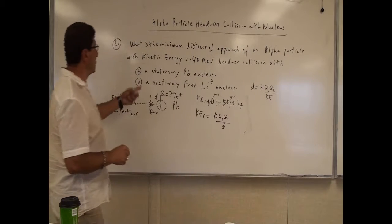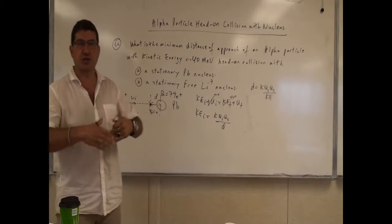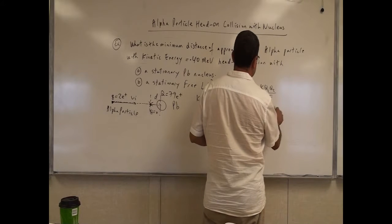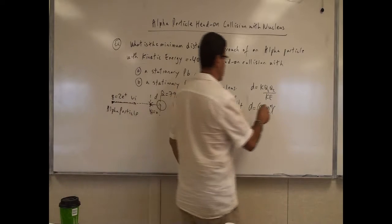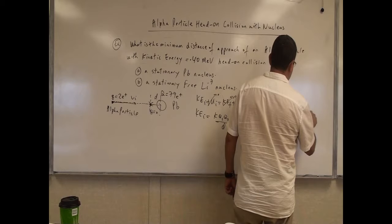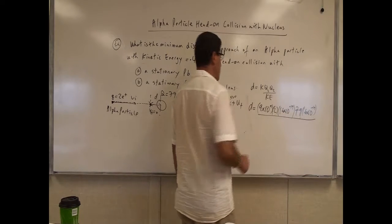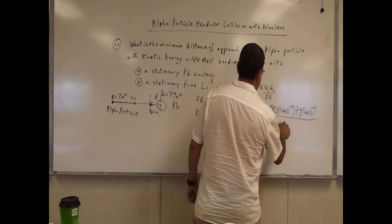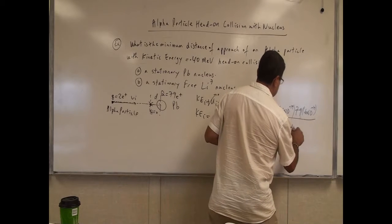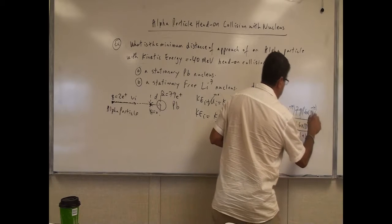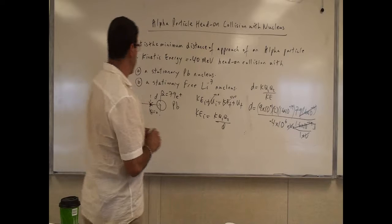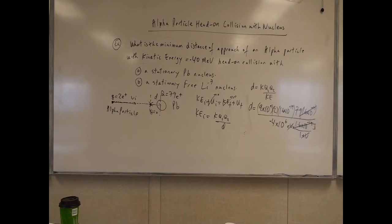The kinetic energy is given in mega electron volts, so we convert it to joules. We plug in: K = 9×10⁹, charge of alpha particle = 2×1.6×10⁻¹⁹, charge of lead nucleus = 82×1.6×10⁻¹⁹. For the kinetic energy: 0.4×10⁶ electron volts times 1.6×10⁻¹⁹ joules per electron volt. The electron volts cancel with one of the charge factors, simplifying the calculation.